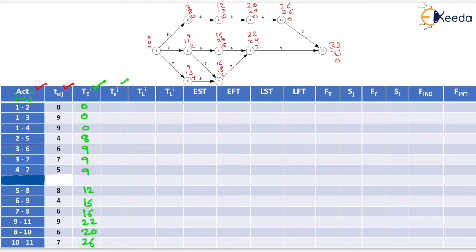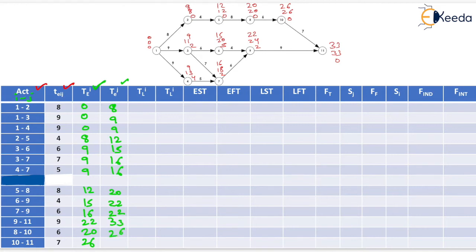Now we need to fill the TEJ values. TEJ for event 2 = 8, for event 3 = 9, for event 4 = 9, for event 5 = 12, for event 6 = 15, for event 7 = 16, for event 8 = 20, for event 9 = 22, for event 11 = 33, for event 10 = 26. We have now filled the TEI and TEJ values.